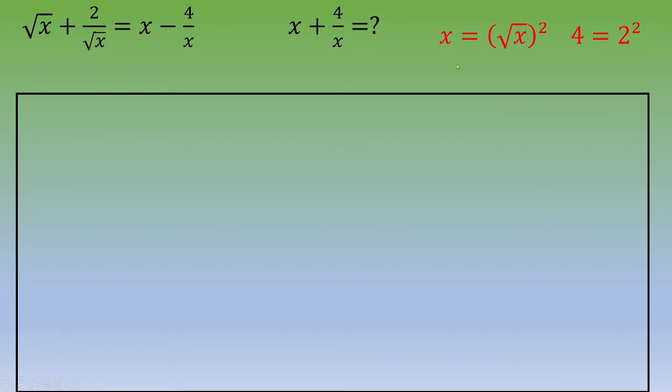So you plug these two values inside this equation and you get square root of x plus 2 over square root of x equals square root of x squared minus 2 over square root of x squared.